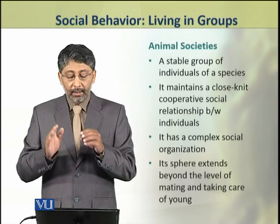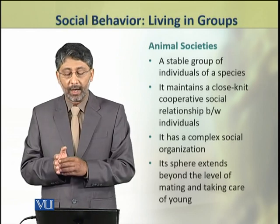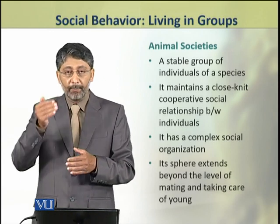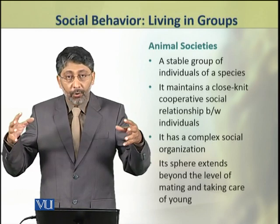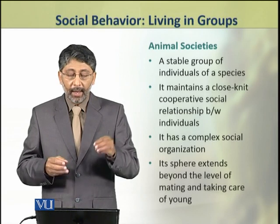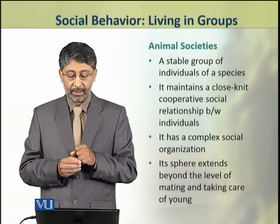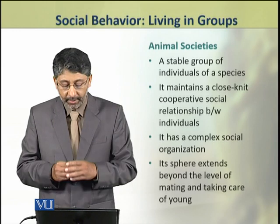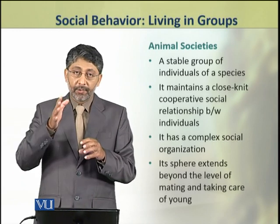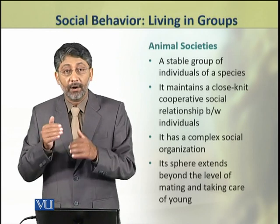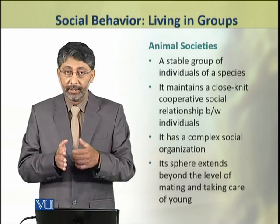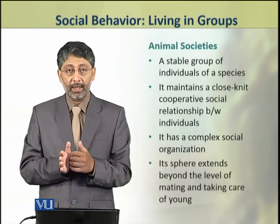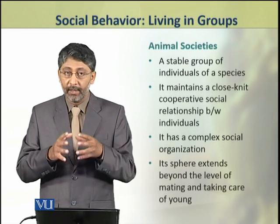Animal societies — by definition — are a stable group of individuals in which the members of a species are closely knit together and have cooperative social relationships. Societies of animals have complex social organization, and the sphere of a society extends beyond the purposes of only reproduction or rearing and caring of the young — there are even more purposes in a cooperative animal society.